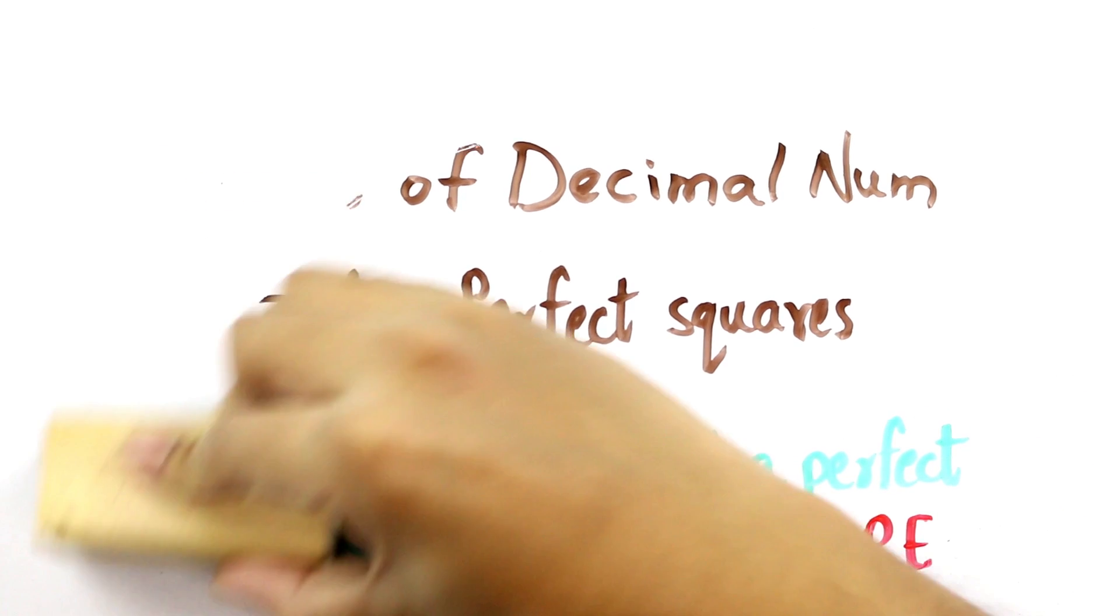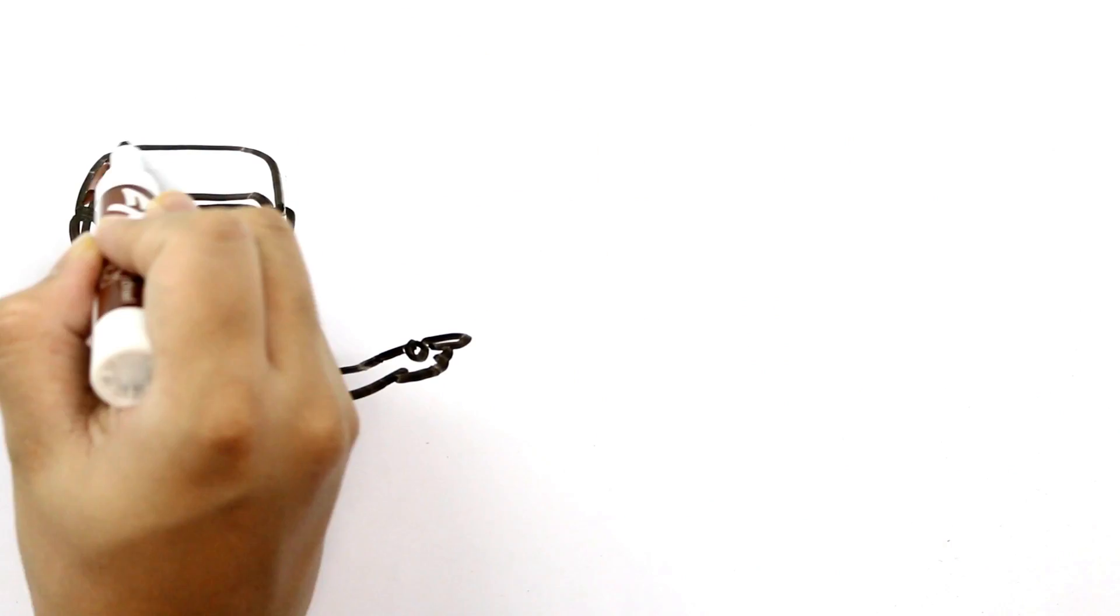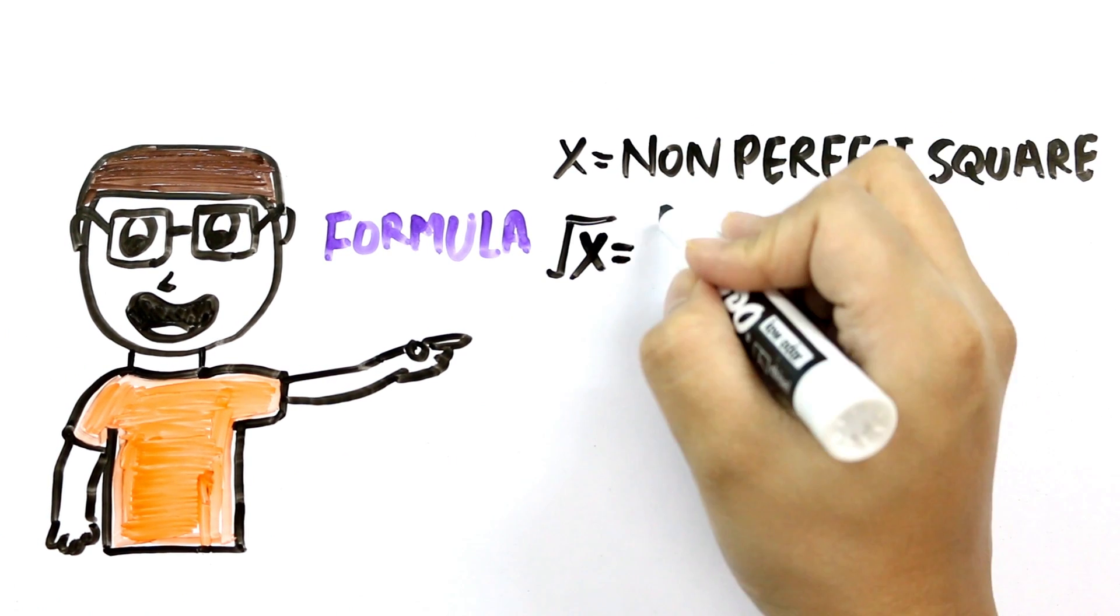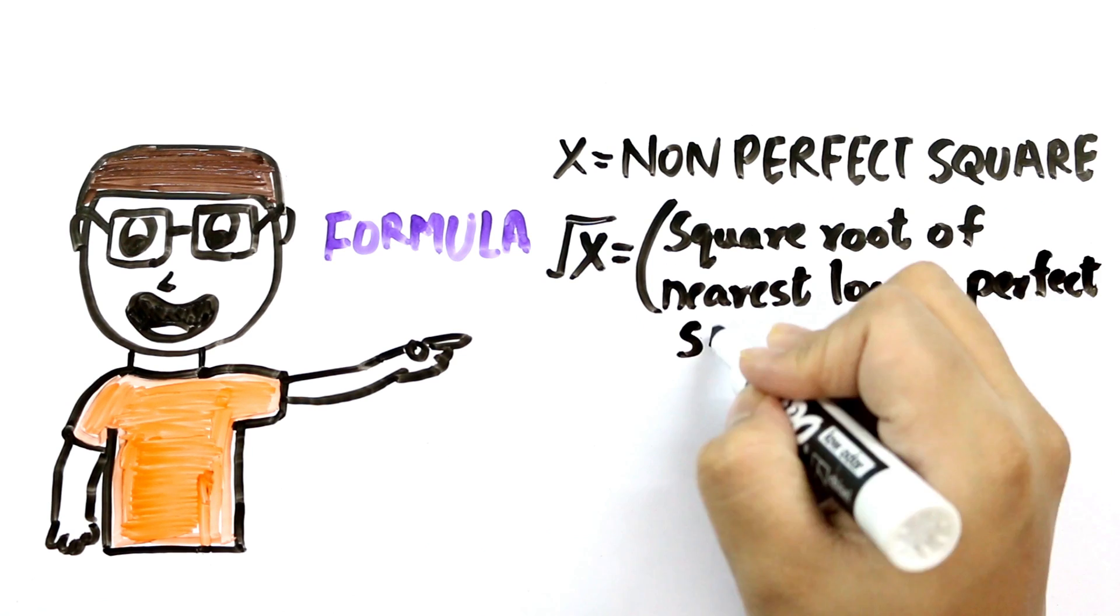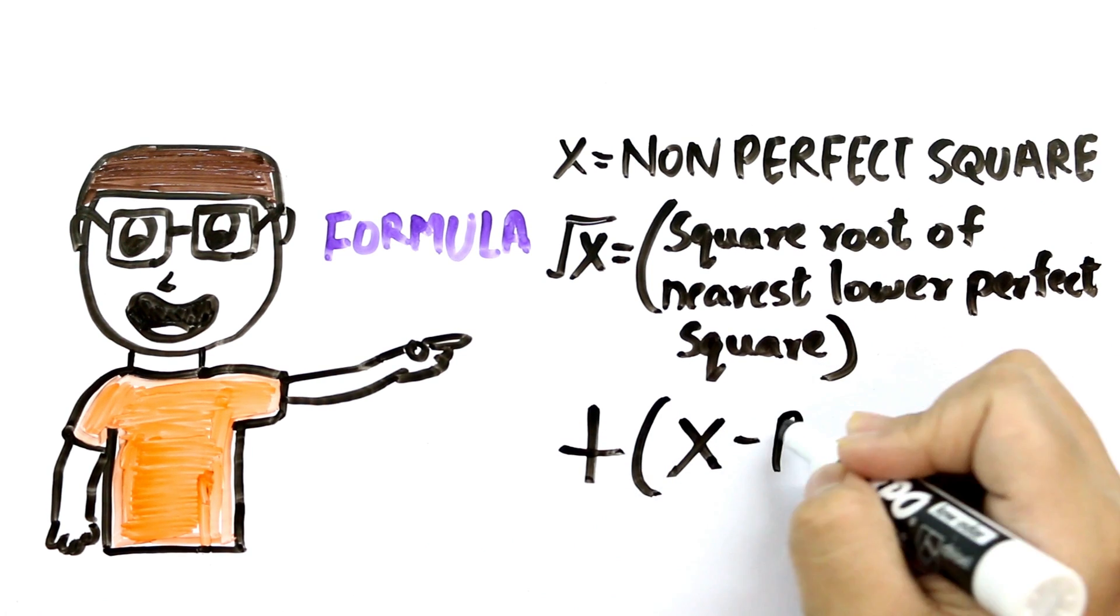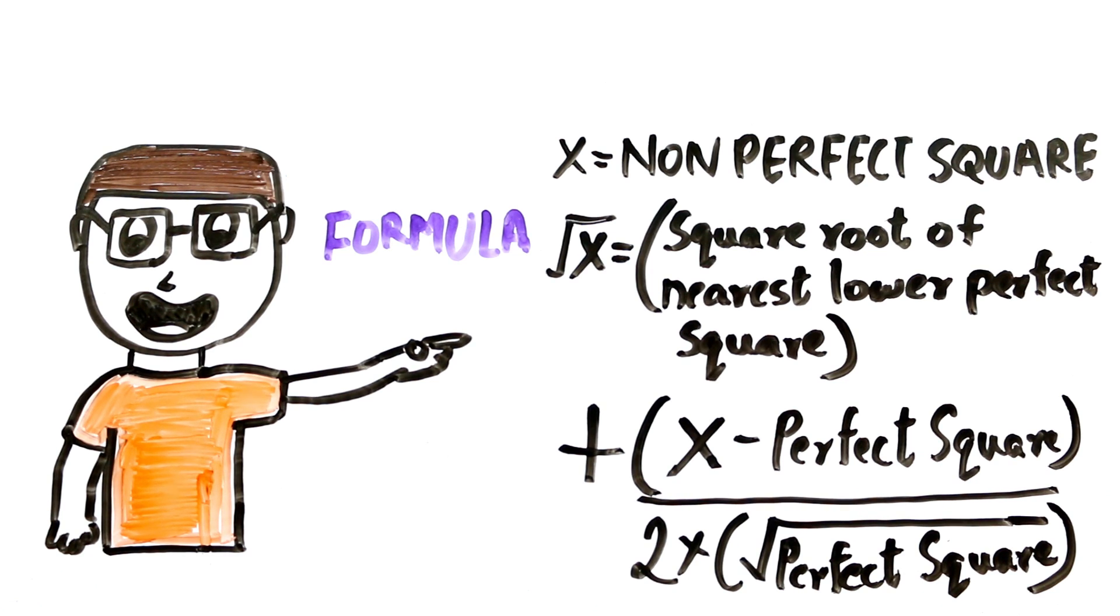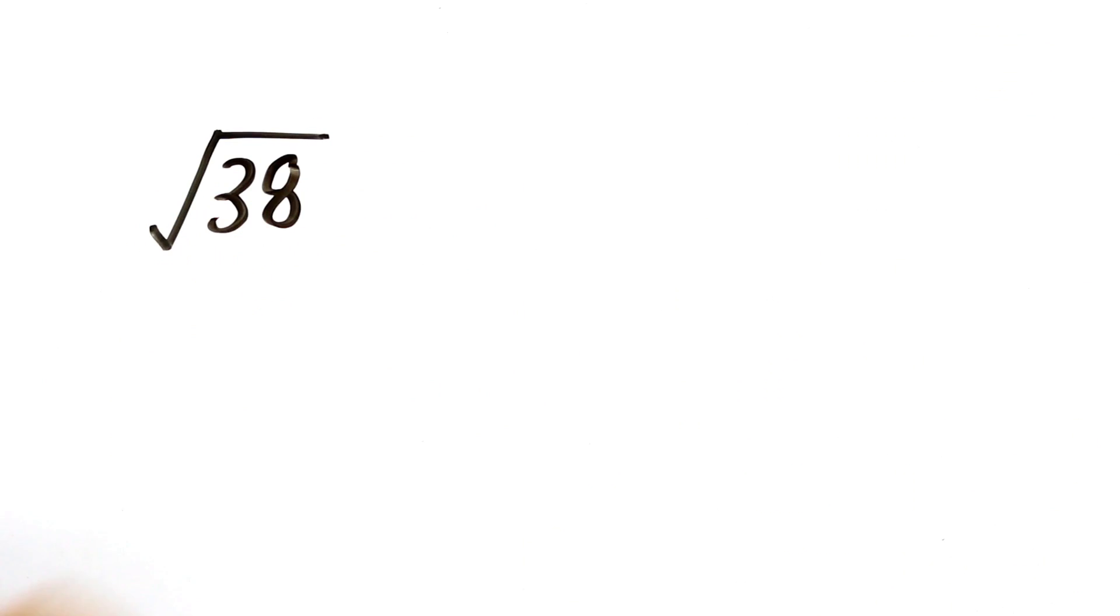Now let's start with the trick. There is a simple formula to find square root of a non-perfect square. It says that the square root of a non-perfect square will be equal to square root of its nearest lowest perfect square plus difference between the number and the perfect square divided by 2 into square root of that perfect square. Seems a bit confusing. Let's solve an example to make things more clear.